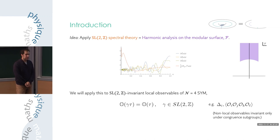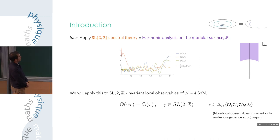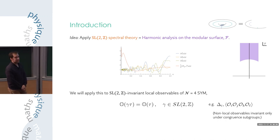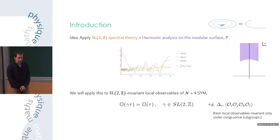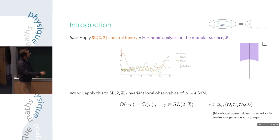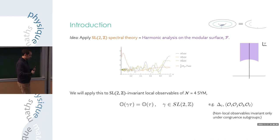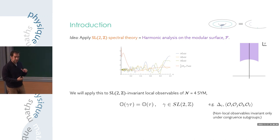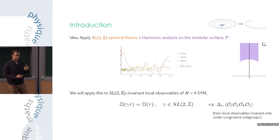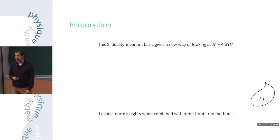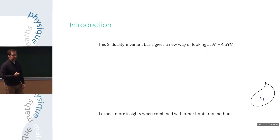The tool is the spectral theory of SL(2,Z) — the harmonic analysis of SL(2,Z) on the fundamental domain F, sometimes called the modular surface in the math community. We will apply this technique to the SL(2,Z) invariant observables of the theory, which include things like operator dimensions or certain correlation functions. This SL(2,Z) spectral theory is very well established and still the subject of cutting-edge work in math. The upshot is that this S-duality invariant basis gives a new way of looking at the theory.